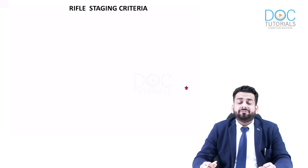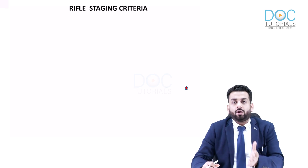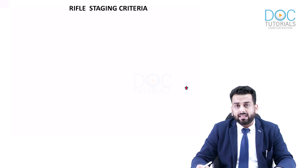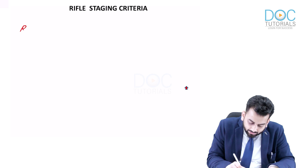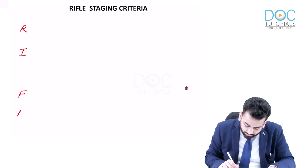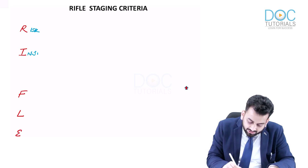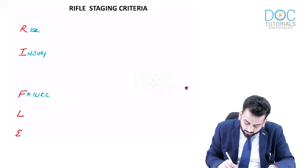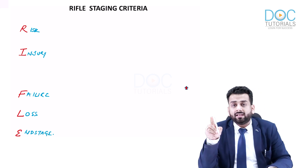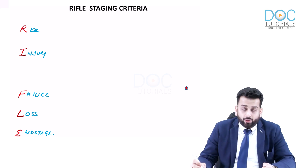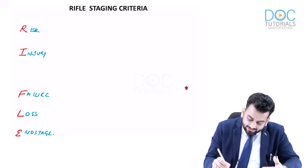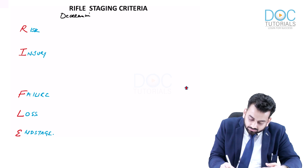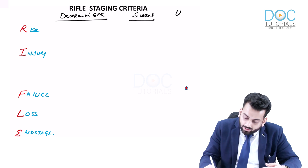Now, RIFLE staging. RIFLE is an acronym standing for Risk, Injury, Failure, Loss, and End Stage — five stages compared to the three stages of KDIGO and AKIN. RIFLE staging divides AKI based on three parameters: decrease in GFR, increase in serum creatinine, and decrease in urine output.